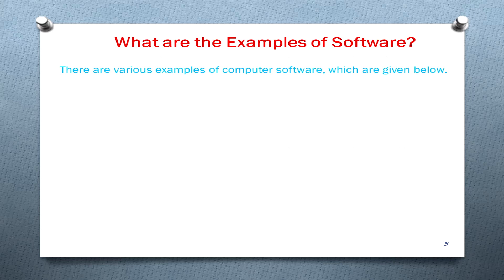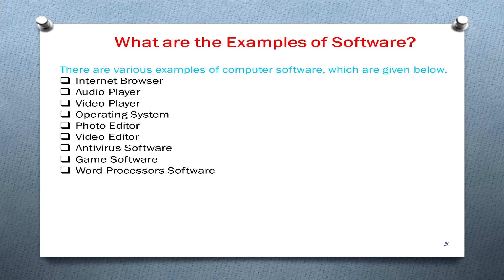There are various examples of computer software, which are given below: internet browser, audio player, video player, operating system, photo editor, video editor, antivirus software, game software, and word processor software.